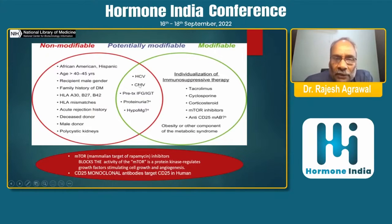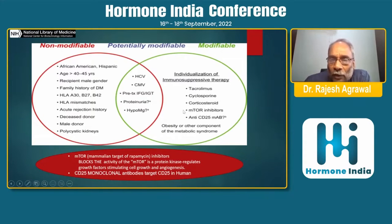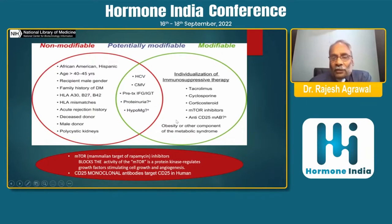Additional risk factors include hepatitis C virus, cytomegalovirus, pre-transplant glycemic status, proteinuria, and hypomagnesemia. Modifiable risk factors are primarily immunosuppressive therapy — most commonly steroids, cyclosporine, tacrolimus, calcineurin inhibitors, mTOR inhibitors (mammalian target of rapamycin inhibitors), monoclonal antibodies, and various other risk factors for metabolic syndrome.